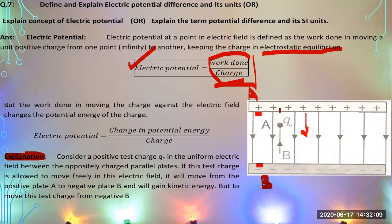If the positive test charge is left free from the positive plate, it moves toward the negative plate without any supplied energy and gains kinetic energy due to its motion. But if you try to move this charge particle from B to A, you have to do work because you are moving against the electric lines of force and moving a positive charge toward the positive plate. You have to do some work, and that work done changes the potential energy of the charge.